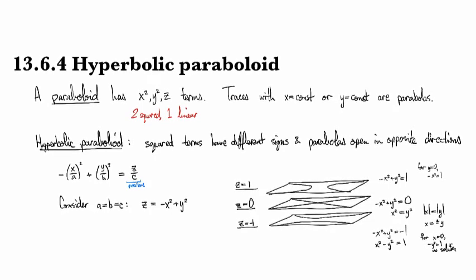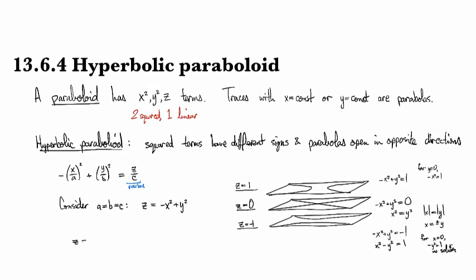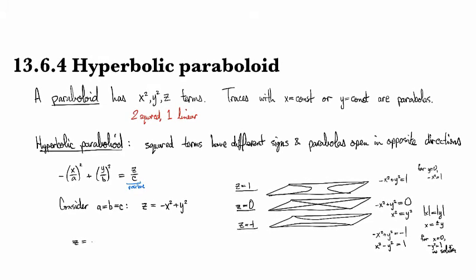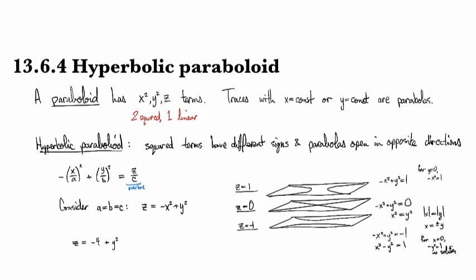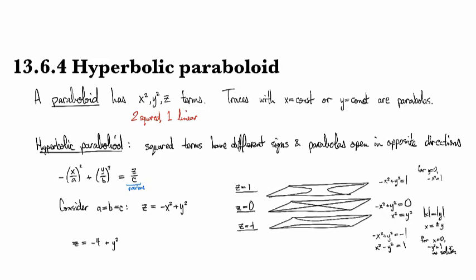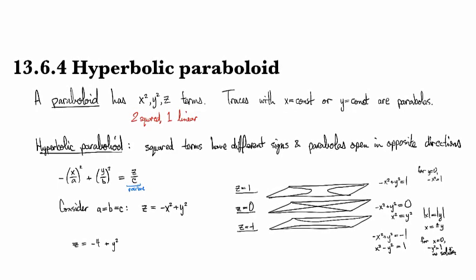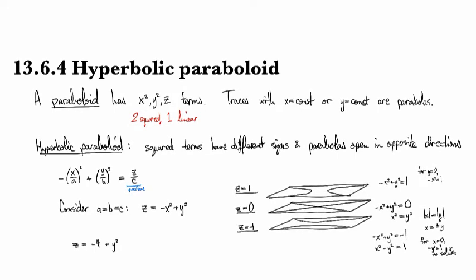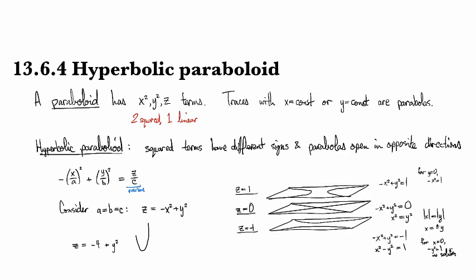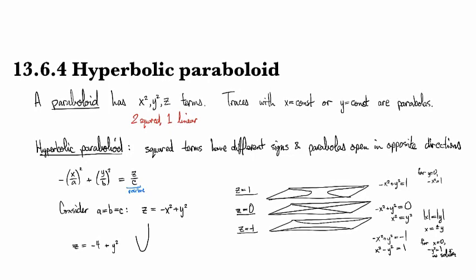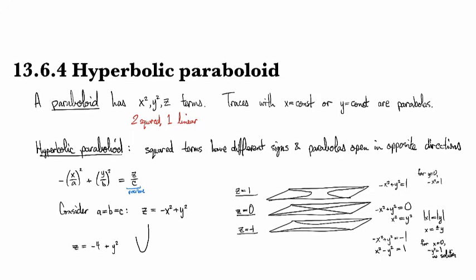So if you fix a value of x, you might see something that looks like this one, which you can recognize as being an upward opening parabola, shifted down by four in the yz plane. And for different values of x, that's going to determine how much it's shifted up or down.